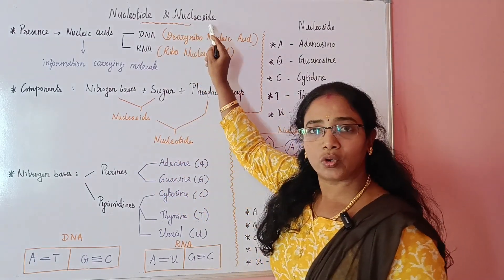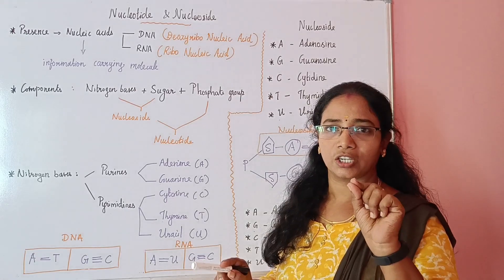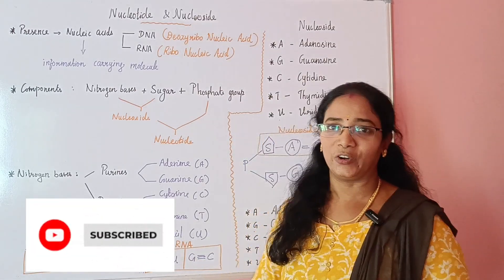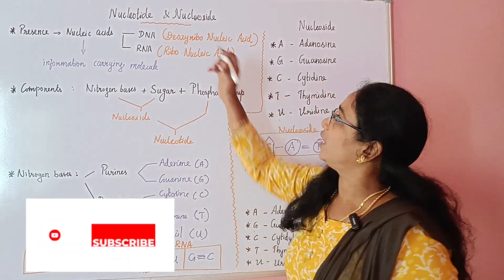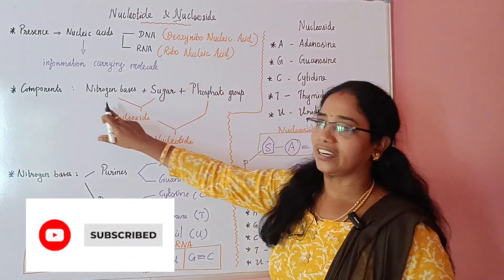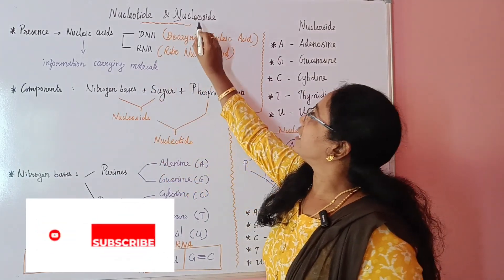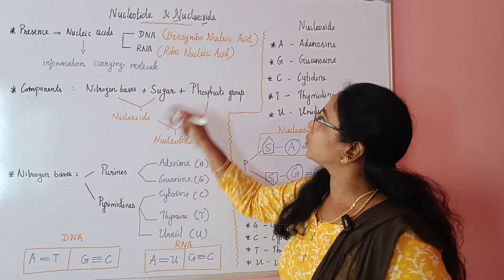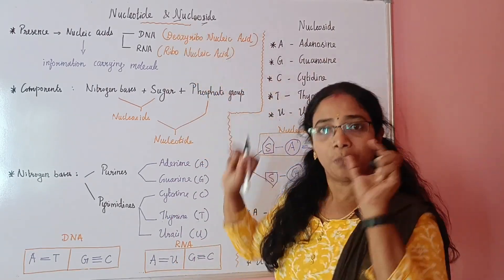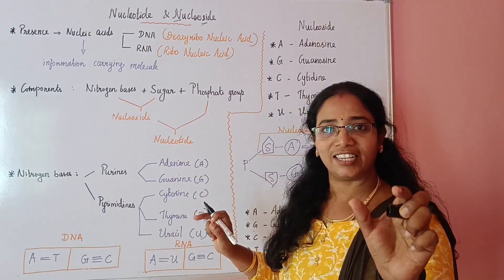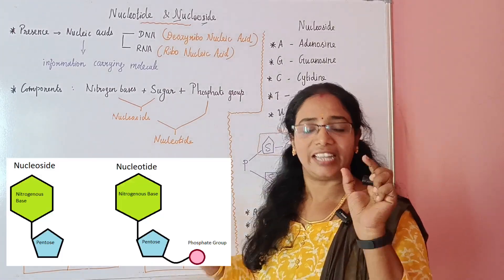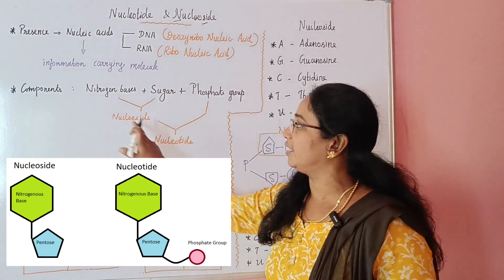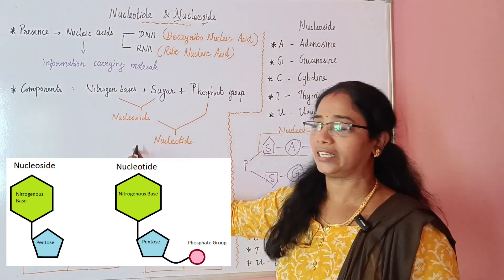Nucleoside is very simple. N is for nitrogen bases, and S is for sugar. So if we have only nitrogen base and sugar joined together — that is nucleoside. N for nitrogen base, S indicates sugar.